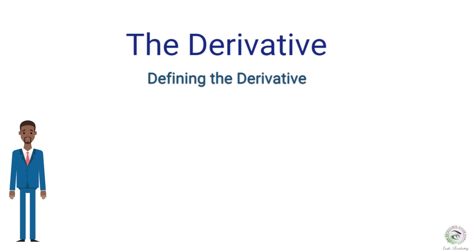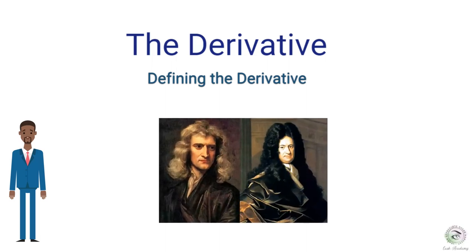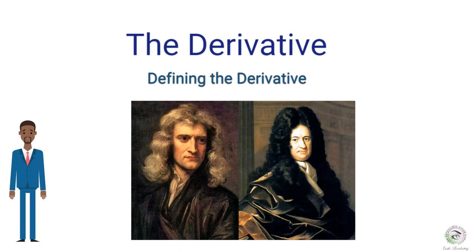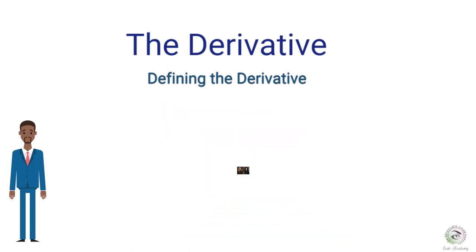Calculus is the branch of mathematics in which we compute derivatives and integrals. Most mathematicians and historians agree that calculus was developed independently by the Englishman Isaac Newton and the German Gottfried Leibniz. When we credit Newton and Leibniz with developing calculus, we are referring to the fact that they were the first to understand the relationship between the derivative and the integral.